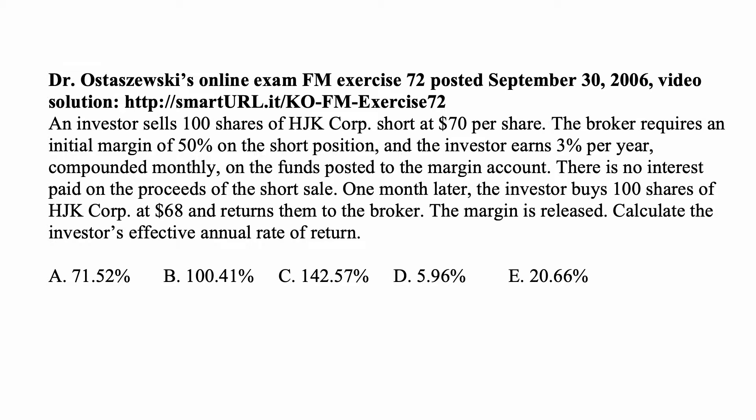An investor sells 100 shares of HJK Corporation short at $70 per share. The broker requires an initial margin of 50% on the short position, and the investor earns 3% per year compounded monthly on the funds posted to the margin account. There is no interest paid on the proceeds of the short sale.